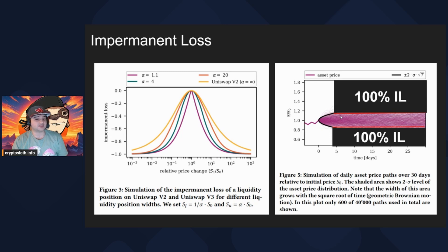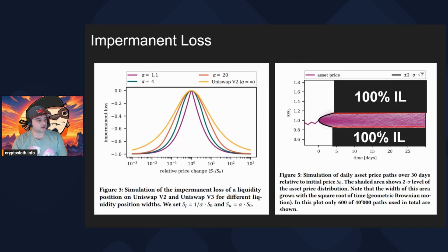If we increase these bands a little bit wider — say we provide liquidity at the wider range around day five on this graph — you'll notice there are more potential price actions that our liquidity bands are in the money for. We're making fees for a longer period of time, although the fees earned per trade decrease because our bands have increased. But the potential for experiencing 100% impermanent loss has also decreased, because we've captured more potential price actions.